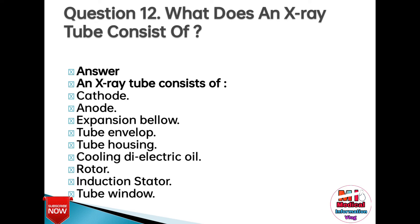Question 12: What does an X-ray tube consist of? Answer: An X-ray tube consists of a cathode, anode, expansion bellow, tube envelope, tube housing, cooling oil, rotor, induction stator, and tube window.